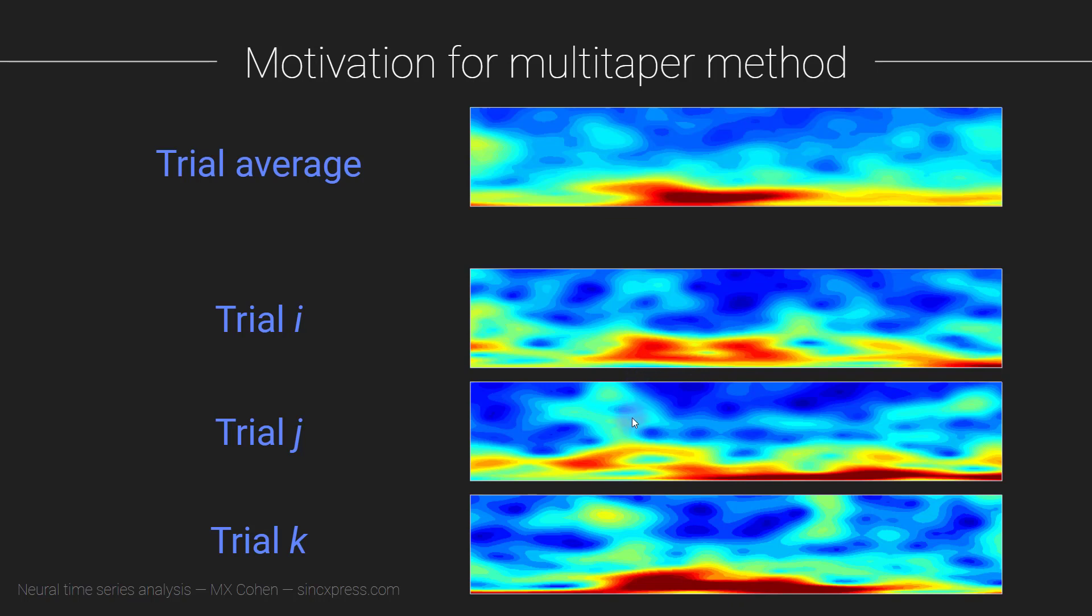But what you also see when you look at these individual trials is that there are bursts of higher frequency activity, so here and here and maybe here or maybe here, that don't really survive the averaging as well.